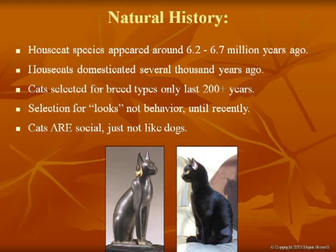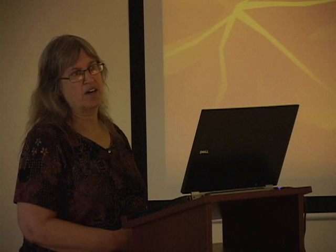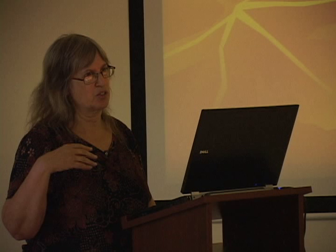Cats are not little dogs. The social system in cats doesn't mimic human patterns. They don't have dominance hierarchies per se, and their social signals don't overlap humans very well. It's why people have trouble reading their cats and they make mistakes. Expect trouble from two-year-olds — we'll talk about that later. People get phone calls about their two-year-old cats suddenly attacking their five-year-old cats or attacking their siblings.